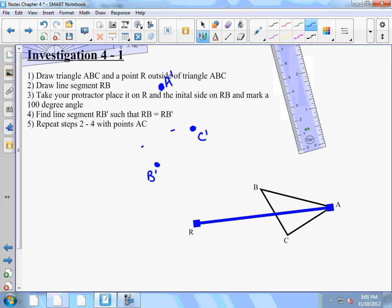So here's where A prime is, and then you're going to use a straight edge and you can connect all three points. All right, and so there we have triangle ABC rotated 100 degrees.